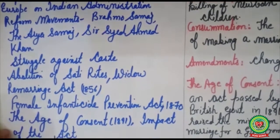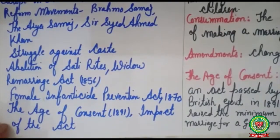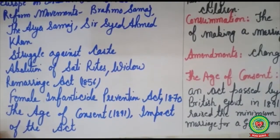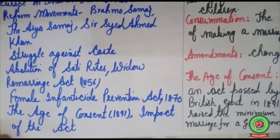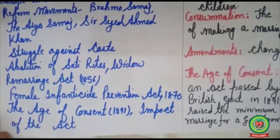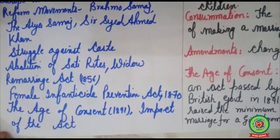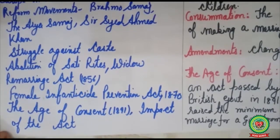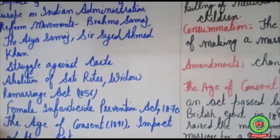In this session, we are going to discuss the Female Infanticide Prevention Act 1870, the Age of Consent 1891, and the impact of the Age of Consent Bill 1891.